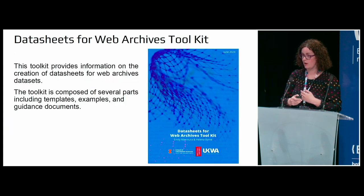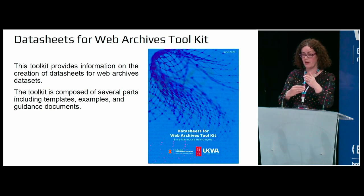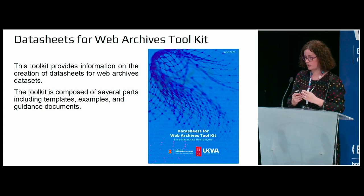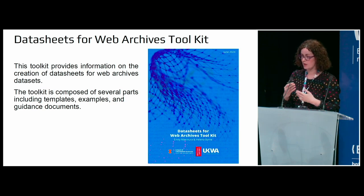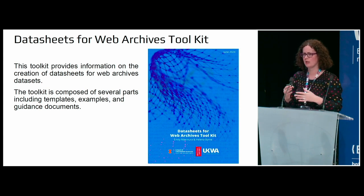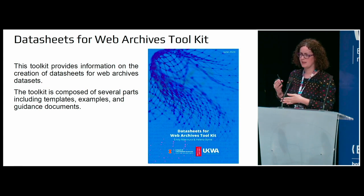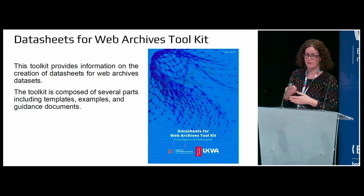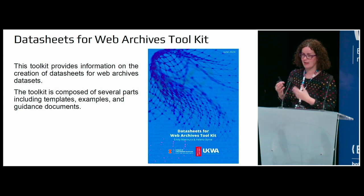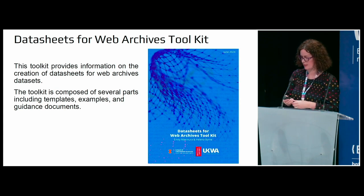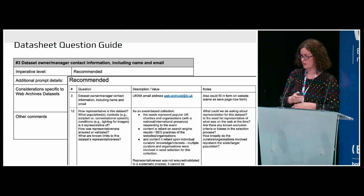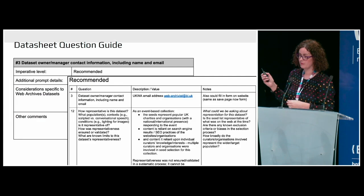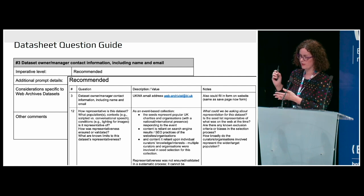We're going to publish our findings from these workshops and the framework of data sheets organised into four categories: must have, should have, could have, and won't have. We'll also include a lot of other supporting documents, as well as some sample datasets, a data sheet that accompanies that, a data dictionary, and tips that came up when we were working on the project about how we're going to publish these datasets.